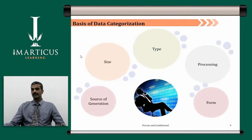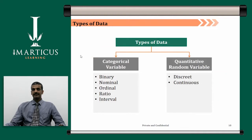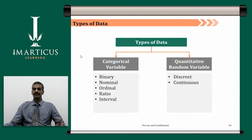There are various factors on the basis of which we do data categorization: the type of the data, the processing of the data, the form of the data, the source of data generation, and size. These factors help in data categorization. When I say types of data, as discussed, we can categorize data as qualitative or quantitative. Qualitative data is also called categorical data. We have different types of variables in this categorical category — binary, nominal, ordinal, ratio, and interval — and you will learn more about these variables in your data science module.